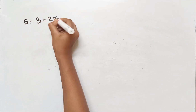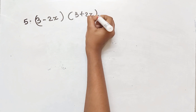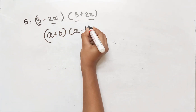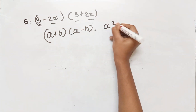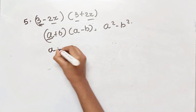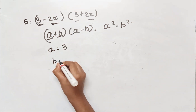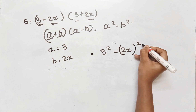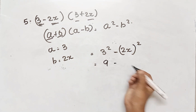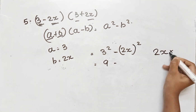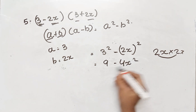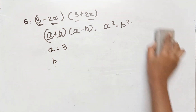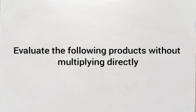Question 5: (3 minus 2x) into (3 plus 2x). Here 3 and 3 are common, 2x and 2x are common. We use the (a + b)(a - b) formula giving a squared minus b squared.